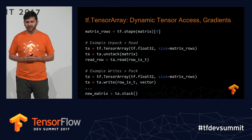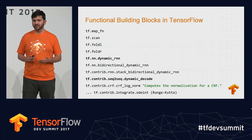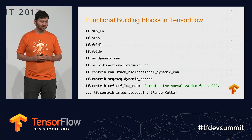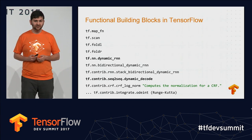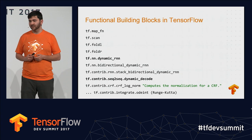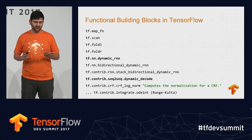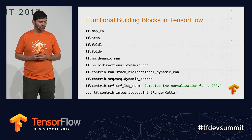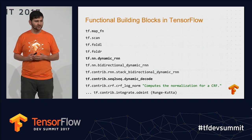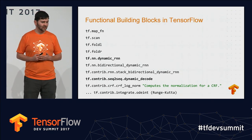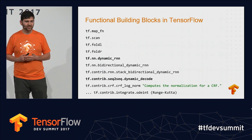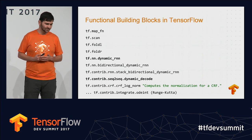Between these two primitives you can get pretty far. We have a whole library of functional building blocks in TensorFlow based on these: a map function, tf.scan (somewhat similar to Theano scan, in some ways more powerful), left-fold and right-fold operators, the dynamic_rnn function, a couple of other RNN variants, and a dynamic decoder function which I'll talk about towards the end.